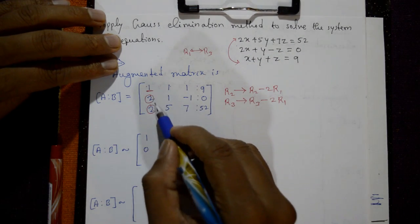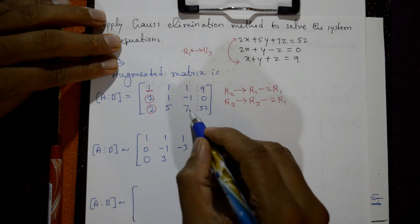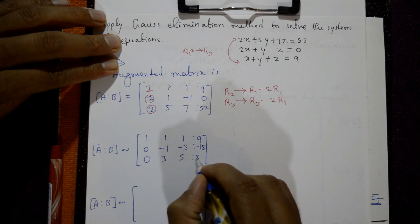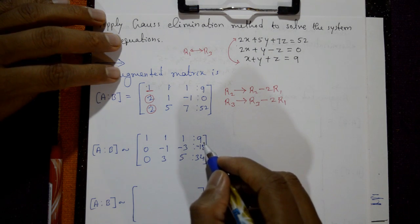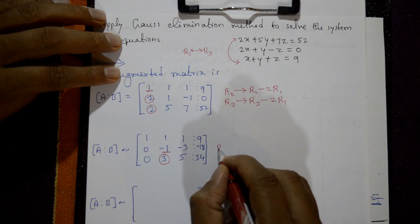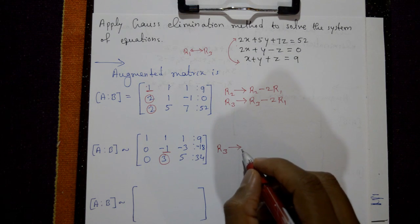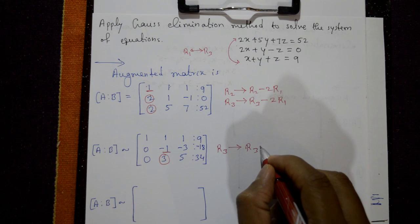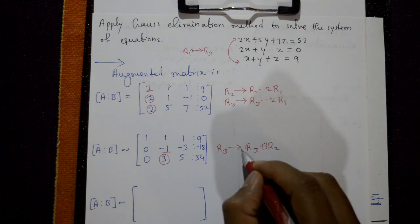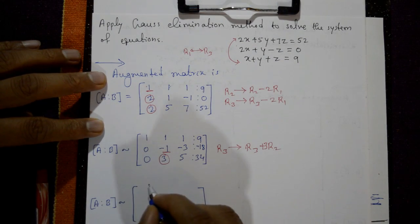R3 = R3 minus 2·R1 gives: 0, 3, 5, and 52 minus 18 is 34. The next leading number is -1. To make the element below it zero, we apply R3 = R3 plus 3·R2.